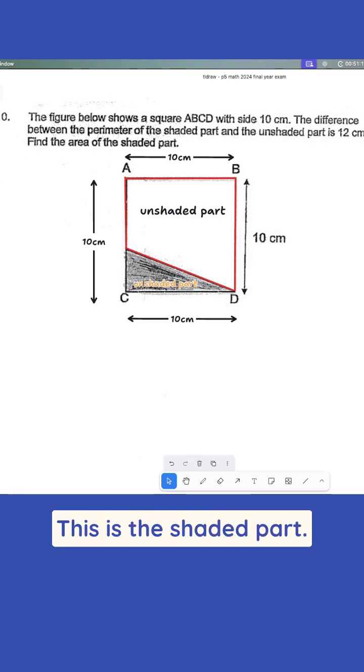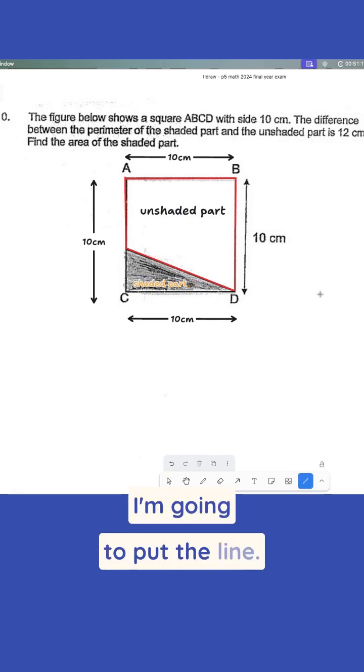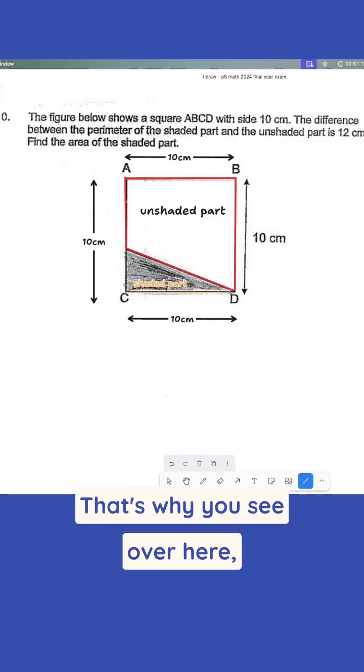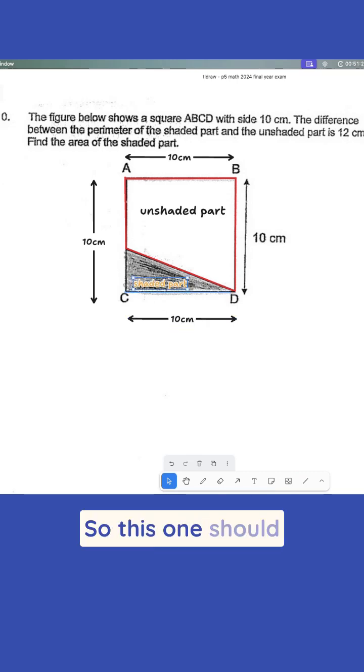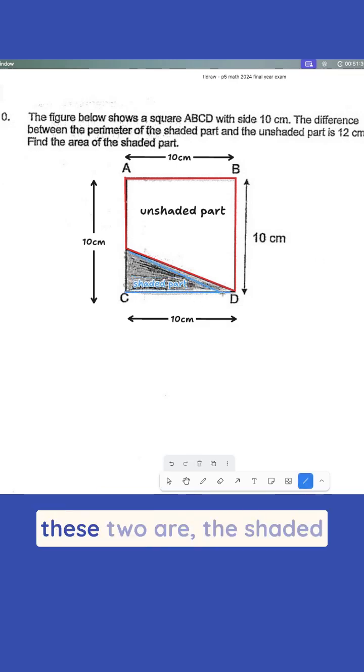This is the shaded part. The shaded part, I'm also going to put the line. That's what you see over here. Maybe put it as blue, so this one should be blue as well. So this line should be a bit more thick. So now we know that these two are the shaded and unshaded part.